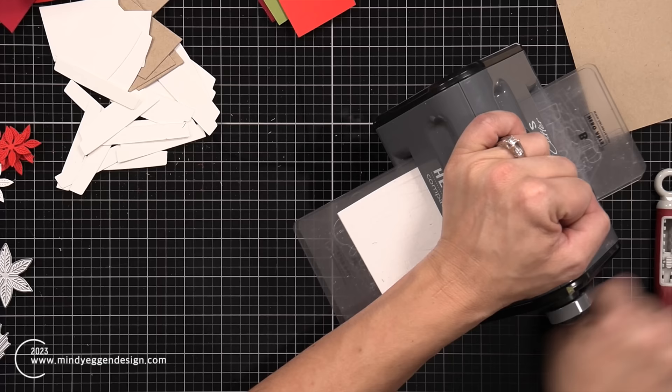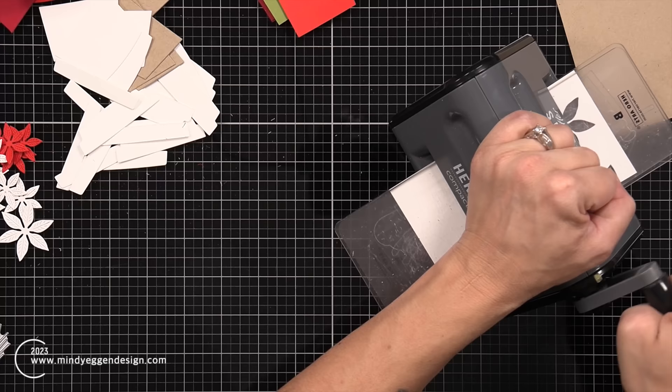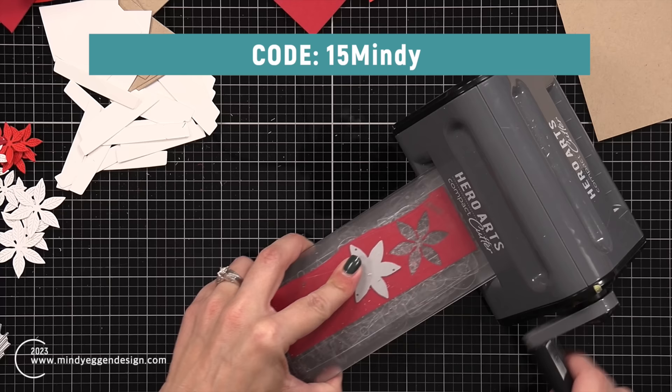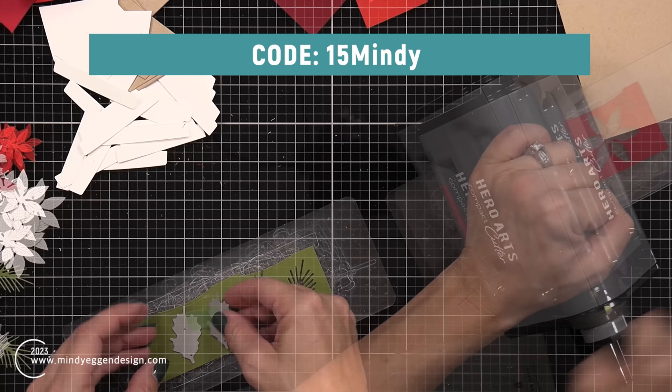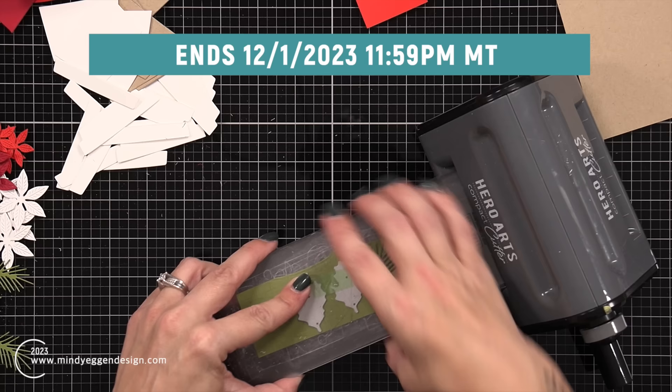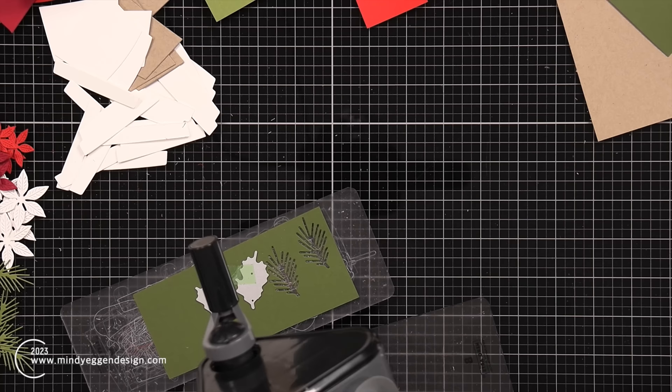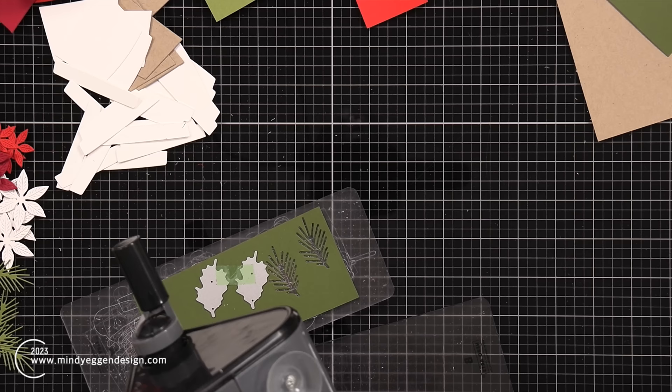So while I'm doing some die cutting here on screen, Concord & 9th has been gracious enough to offer my viewers a gift code. So you can pick up some products, whether it's something you've been looking for or products that I'm using in the video today, and you can get 15% off with the code 15 and Mindy. I will put that at the top of the screen for you, and that's going to get you 15% off your order. Now this is only for a limited time. It starts today, which is November 28th, and then it's going to run through December 1st 2023 and it'll end at 11:59 p.m. mountain time. I will also have that information down below and on my blog.